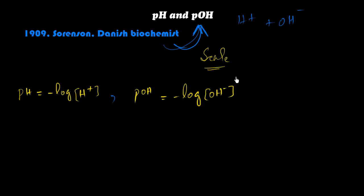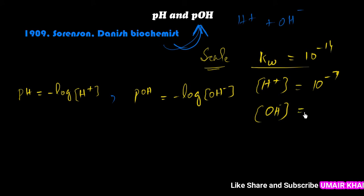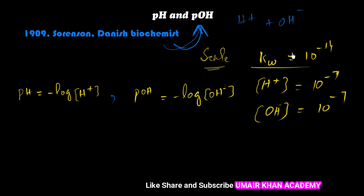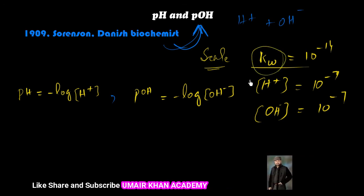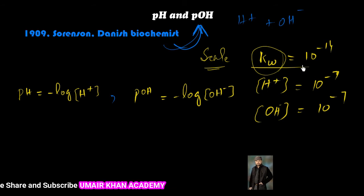As in the last lecture of the ionic product, we just measured the Kw which was equal to 10 raised to power minus 14. The hydrogen ion concentration is equal to 10 raised to power minus 7, and hydroxyl ion concentration for water is 10 raised to power minus 7. These all were the values from the ionization of the water and we know that it is the dissociation or ionic constant of the water.